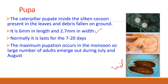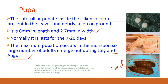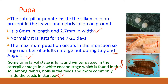The pupa is 6 mm in length and 2.7 mm in width, and the pupal stage normally lasts 7 to 20 days. Maximum pupation occurs during the monsoon, so large numbers of adults emerge during July and August. Sometimes the larval stage is prolonged and the winter is passed in the caterpillar stage in a white cocoon found in soil among debris, bolls in the fields, or inside seeds in storage. The adult moth emerges in about 7 days.